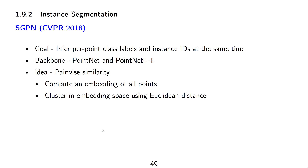Instance segmentation was tackled by SGPN. The goal is to infer two labels: a class label per point and an instance ID. For example, a table with four legs would have each point labeled with the class 'leg', but each separate leg would get a separate instance ID from zero to three, so we can distinguish points from different legs.